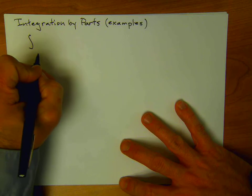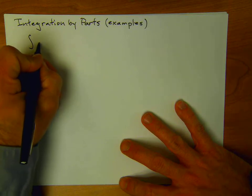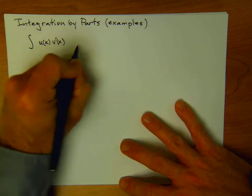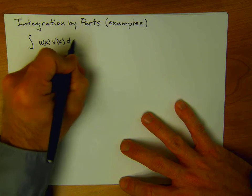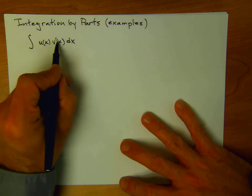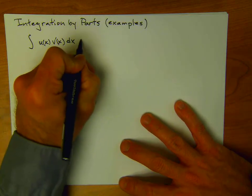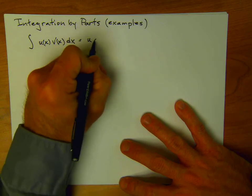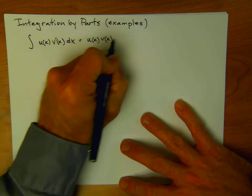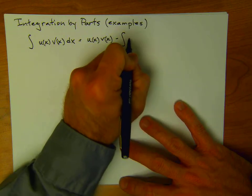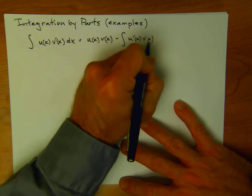So if I have an integral of something that looks like u times v prime — so you basically have two functions that are multiplied, one we call u and the other v prime — then the way to find that antiderivative, working the product rule in reverse, is u(x) times v(x) minus the integral of u prime times v.